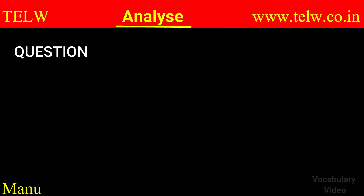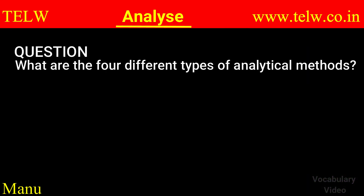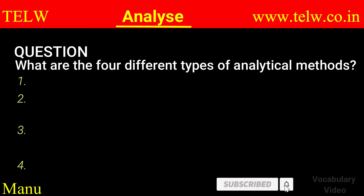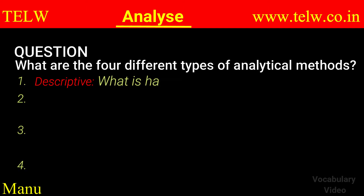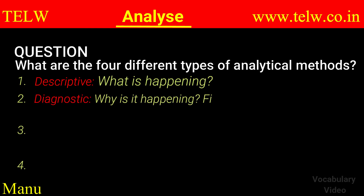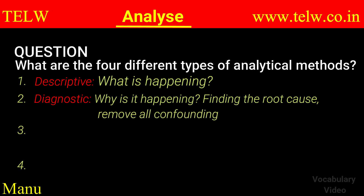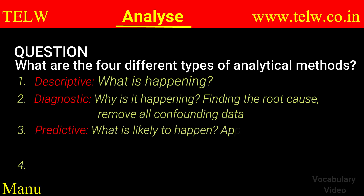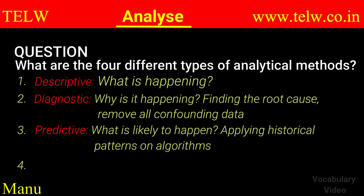Now let's look at a relevant question: what are the four different types of analytical methods? The first is descriptive, which answers the question 'what is happening?' The second is diagnostic — 'why is it happening?' — finding the root cause and removing all confusing data. The third is predictive — 'what is likely to happen?' — applying historical patterns using algorithms to predict the future.